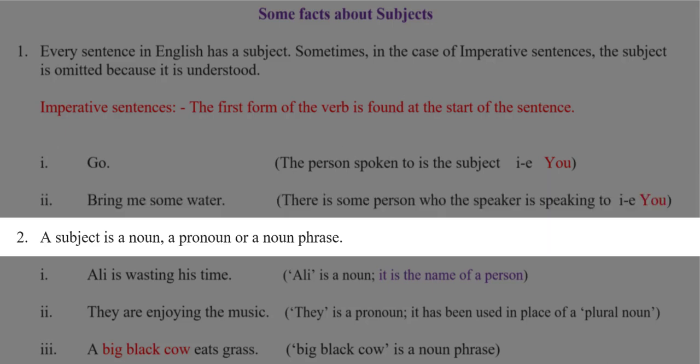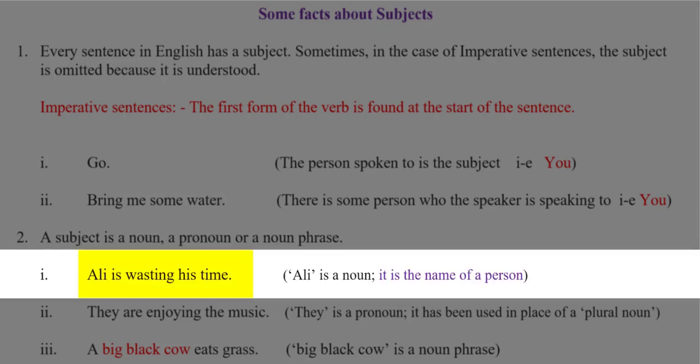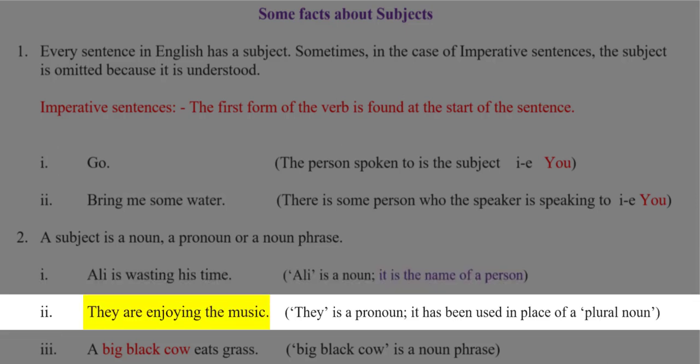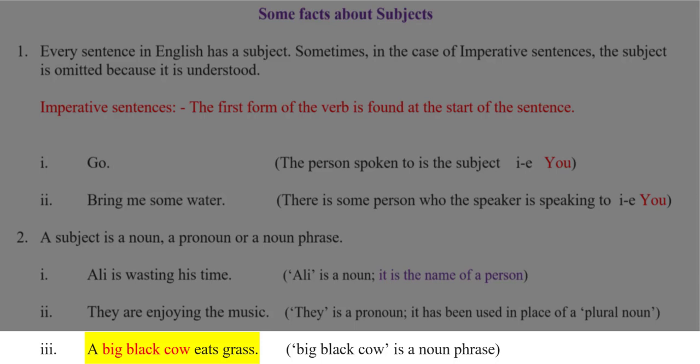Secondly, a subject is a noun, a pronoun, or a noun phrase. 'Ali is wasting his time.' Ali is the subject. 'They are enjoying the music.' They is a pronoun and it is the subject. 'A big black cow eats grass.' A big black cow is a noun phrase and it stands as the subject in this sentence.